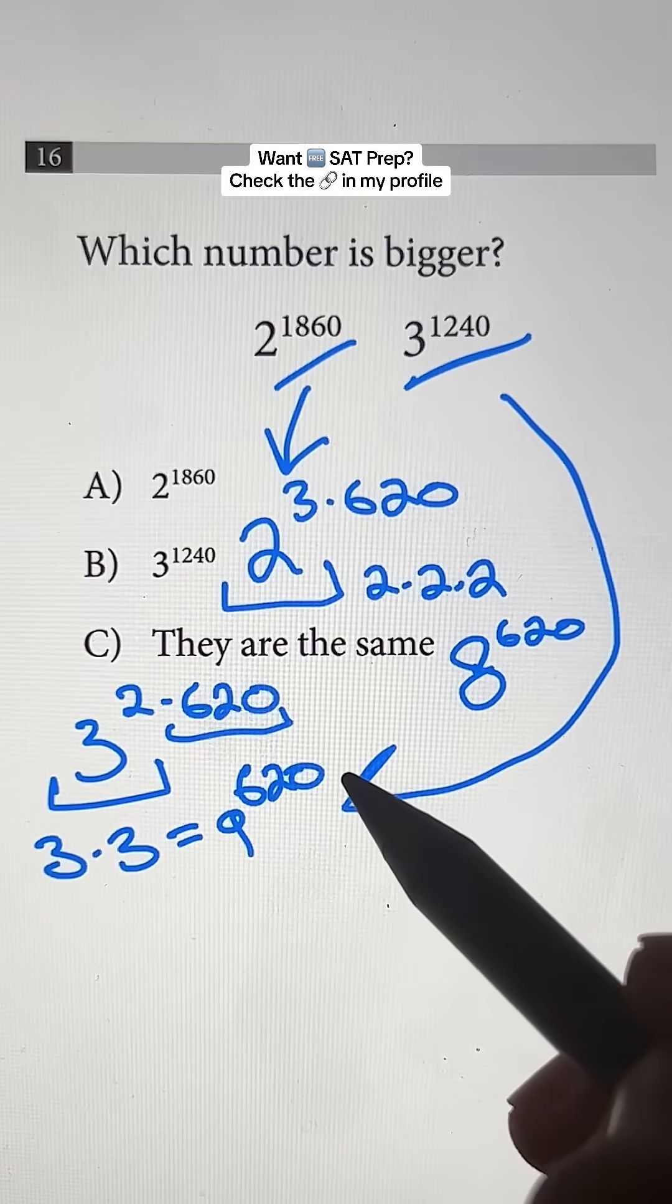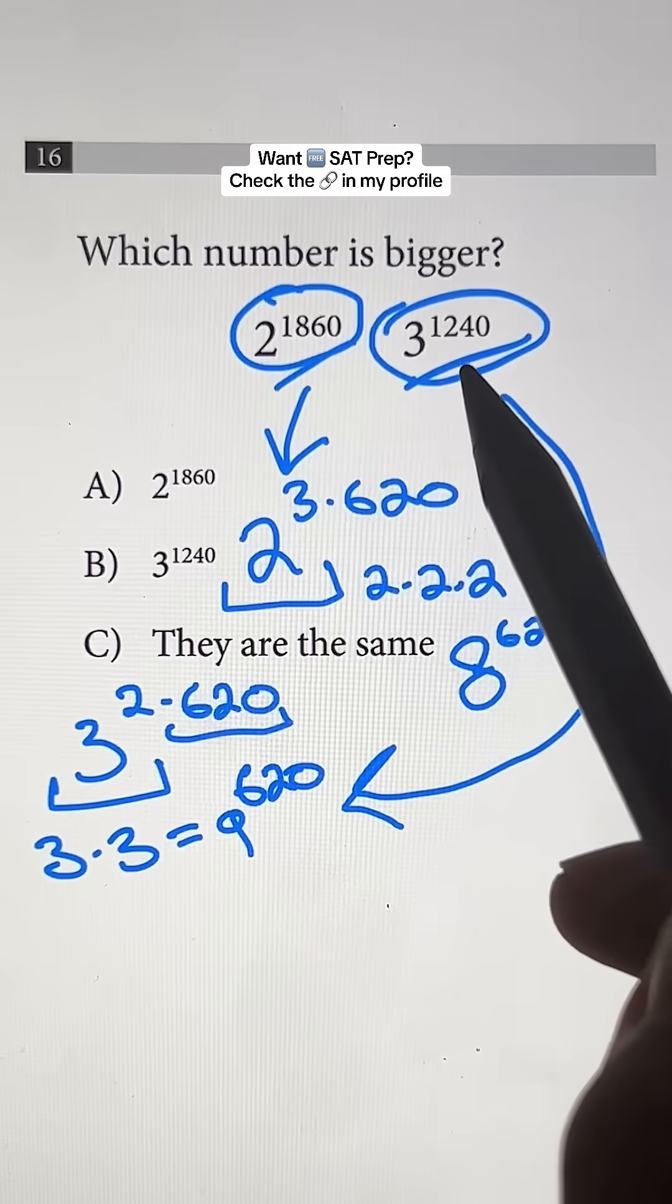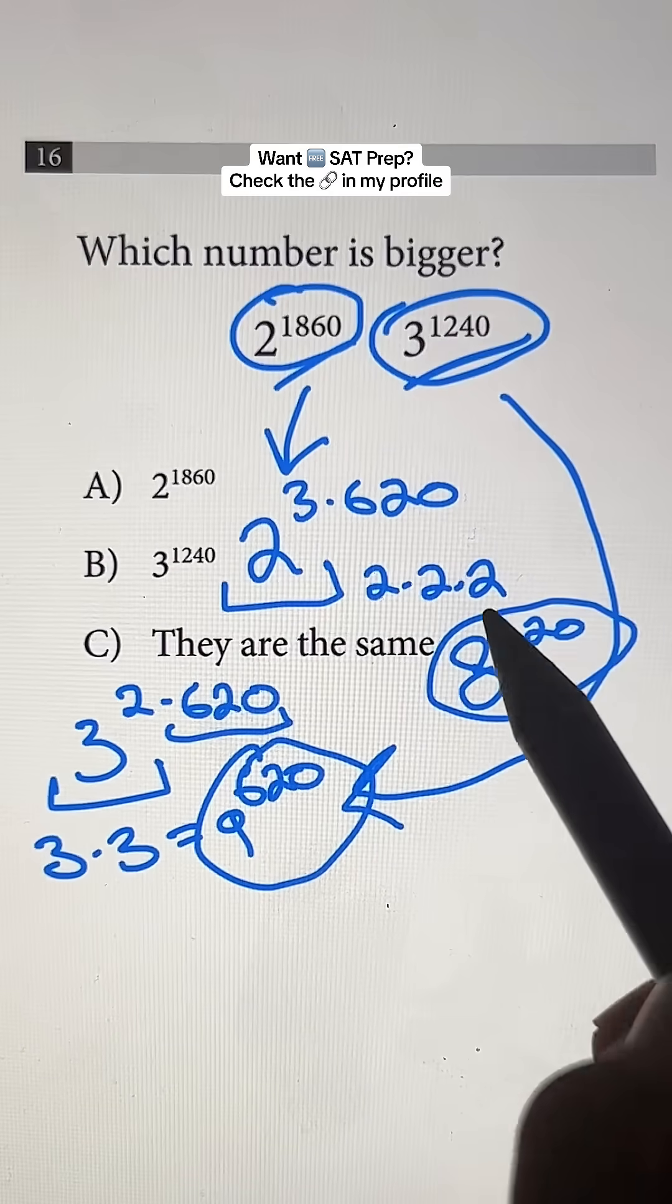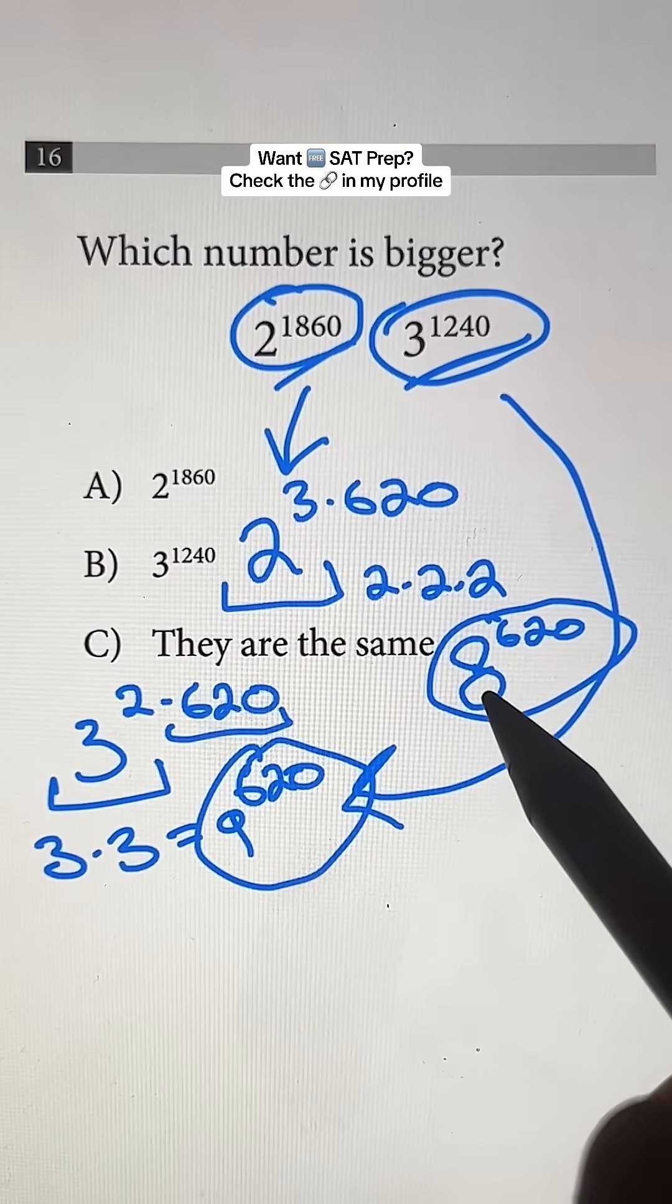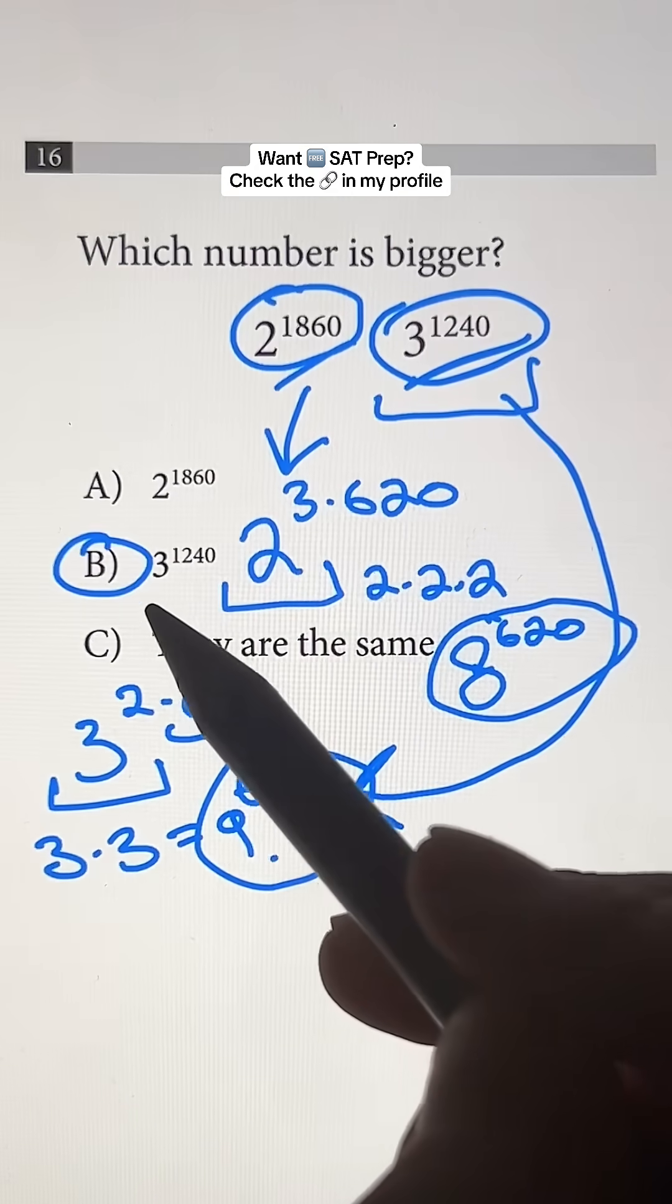And because we've simplified the numbers, it's easier to compare. Instead of comparing 2 to the 1860th power and 3 to the 1240th power, which is just crazy, all we have to do is compare 9 to the 620th power and 8 to the 620th power. Because 9 is clearly greater than 8, and this one is associated with 3 to the 1240th power, then the answer is B.